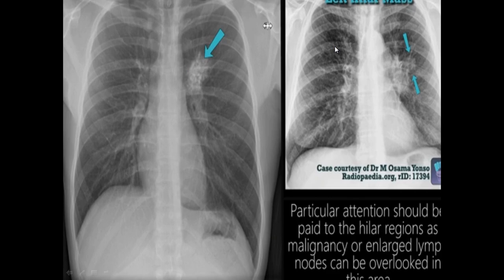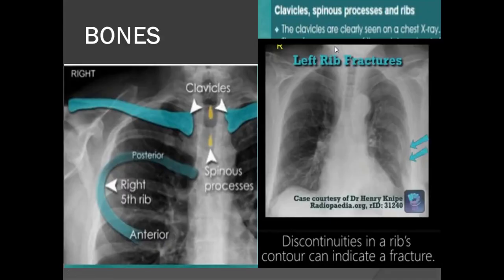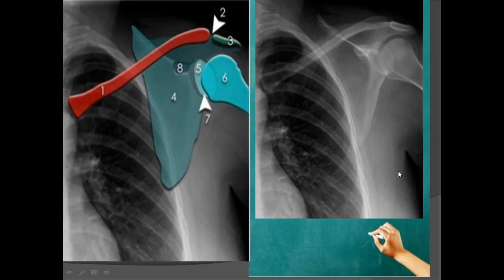When reading a chest X-ray, don't forget the bones. Always look at the bones — the right clavicle, the rotation, the distance between the spinous process and the medial end of the clavicle, the posterior ribs, anterior ribs, and the scapulae. Here there are discontinuities and multiple fractures of the left ribs.